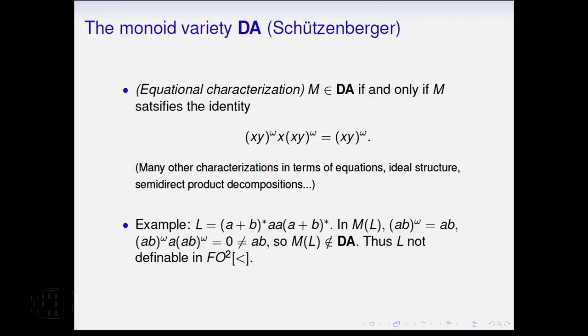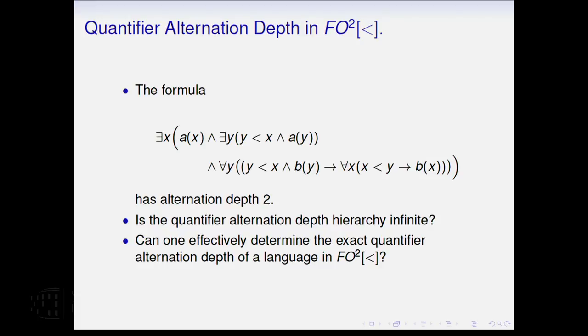So in the example that we had before of the set of words that contain two consecutive A's, if you just look at the calculation that was done before, replace X and Y by A and B respectively, then AB, the idempotent power of AB is just AB, but if you insert an A in this, evaluate the left-hand side of that equation, you get a different element. You get the zero. And that's the way you can use this to prove that this cannot be expressed using two variables. And moreover, if it does satisfy the equation, then there is a way to write a sentence for it.